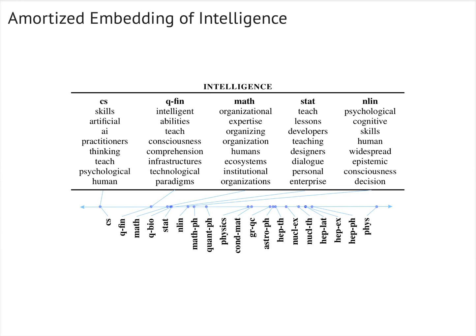The amortized embedding enables group-specific interpretation of word usage, and it outperforms existing methods in predicting held-out data.